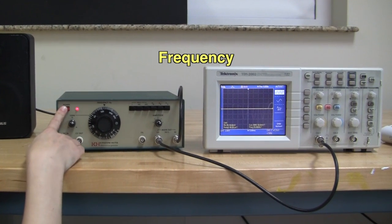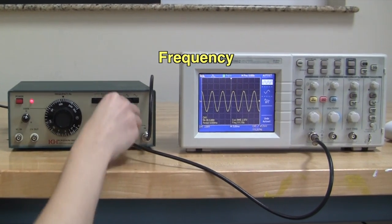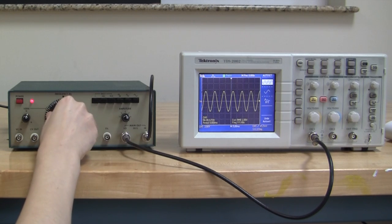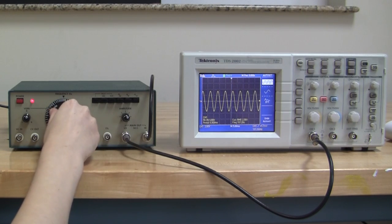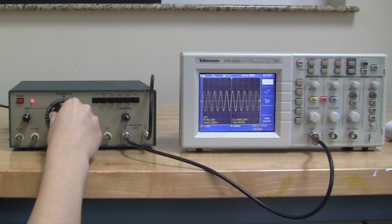Let's watch what happens as we change the frequency of the oscilloscope. As the frequency increases, the time it takes for the oscillation to repeat, also known as the period, decreases.